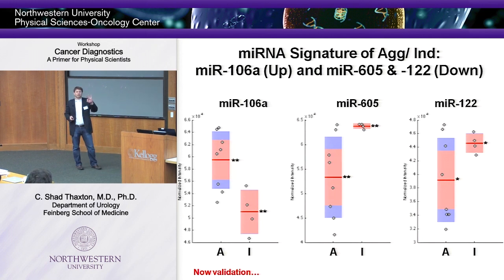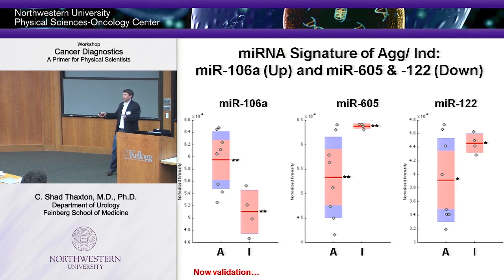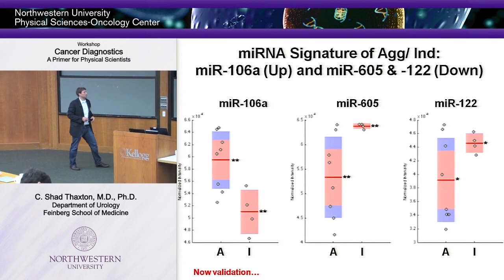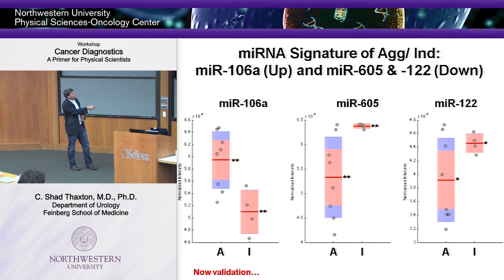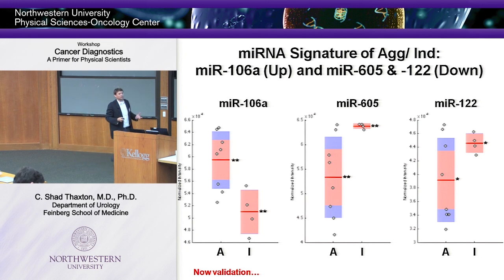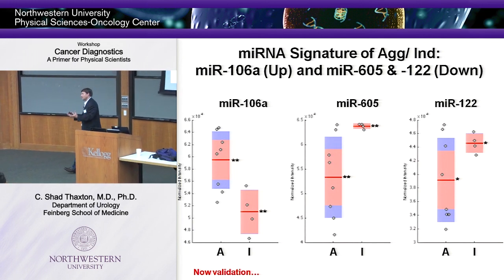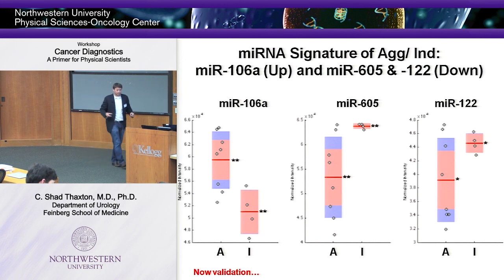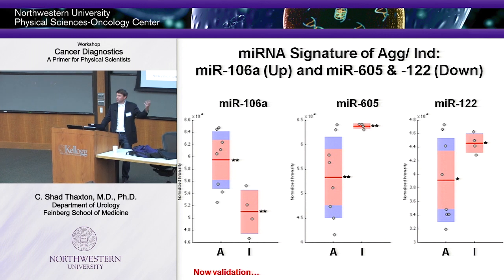MiR-106 is overexpressed in patients with aggressive versus indolent disease. MR-605 is increased in indolent versus aggressive. MR-122 shows the same phenomenon. After generating data like this, you need to validate it — take the collected data and study much larger numbers of patients to understand whether it's clinically relevant, validating the biomarkers fished out of these large studies.